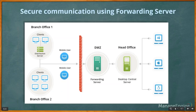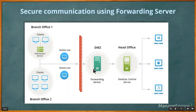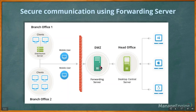Roaming users who move from one location to another can be managed with Desktop Central. If you're managing the Desktop Central server on LAN or DMZ, you can enable NAT in your firewall or utilize the forwarding server. The forwarding server acts as a secured gateway between roaming agents and the Desktop Central server — all communication from roaming agents to the server is routed through it.